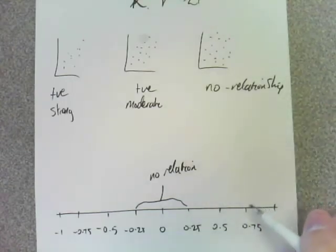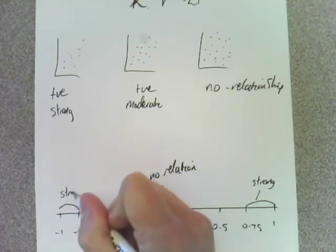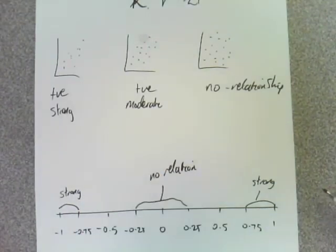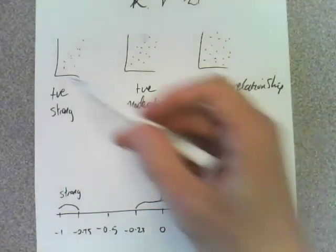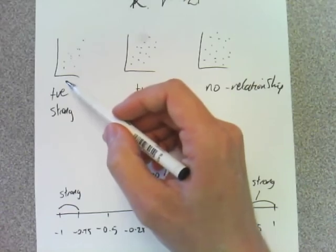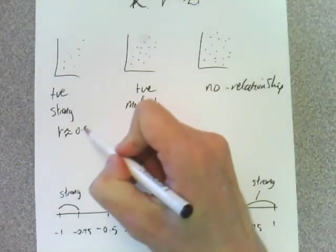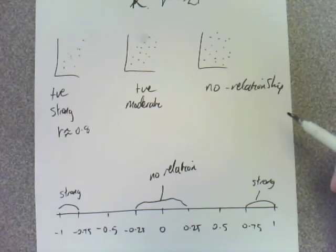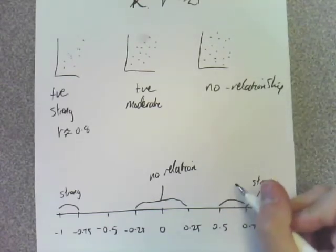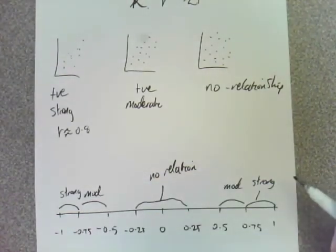Between here and here is strong, and the same on this side. The difference is in what, though? One's positive, one's negative. So it doesn't matter which one it is. You would say that this probably had a correlation coefficient — Pearson's product moment correlation coefficient — R equals approximately 0.8. In between 0.5 and 0.7 is moderate. Which leaves what? Between 0.25 and 0.5.